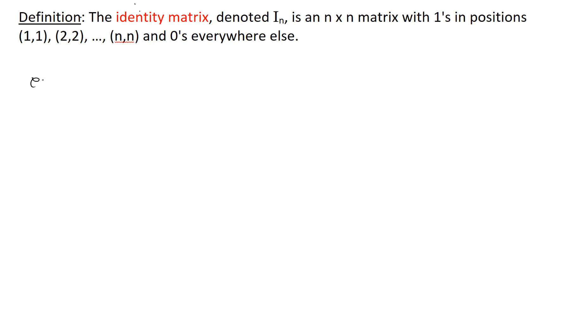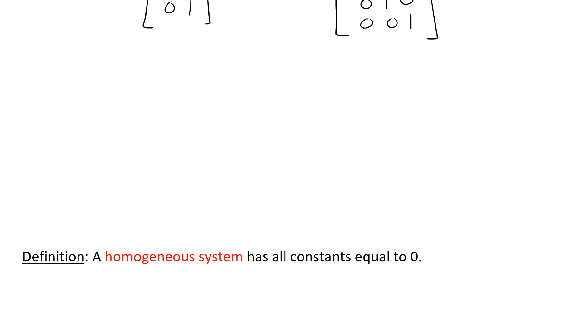Let's take a look at a few examples. The identity matrix with two rows and two columns, I2, has 1s on the diagonal and 0s everywhere else. I3 is a 3 by 3 matrix with 1s down the diagonal, 0s everywhere else, and so forth.